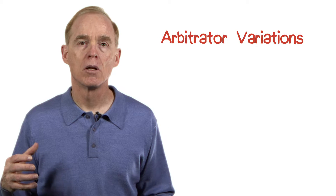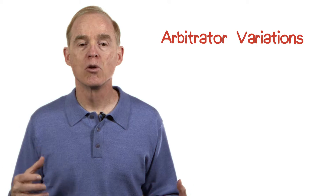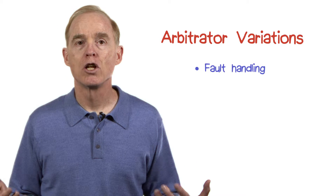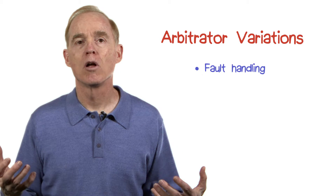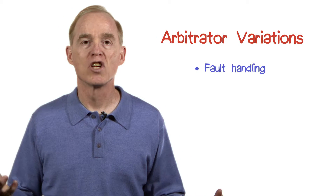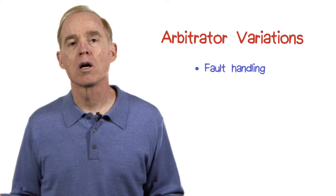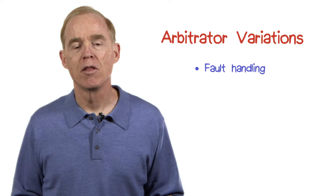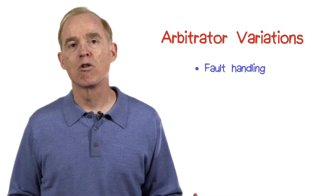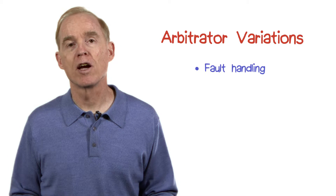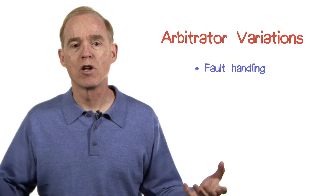Some of the variations for arbitrator connectors include how they handle faults. Typically, with a simple arbitrator scheme, there's a single decision made. But more complex systems might involve a voting scheme. That is, if there are three arbitrators around, they would have to vote on the course of action, and the majority would rule.